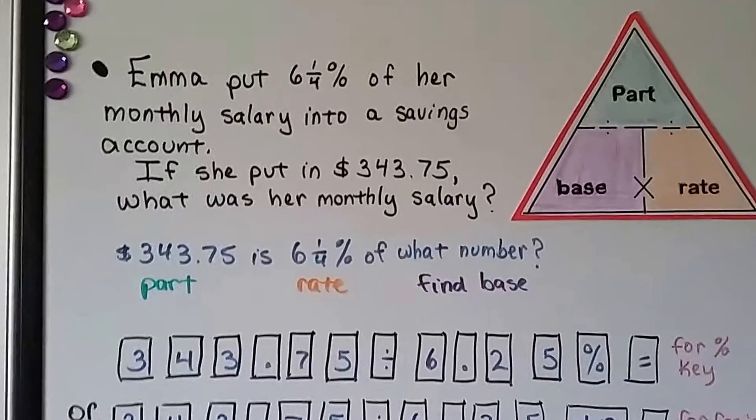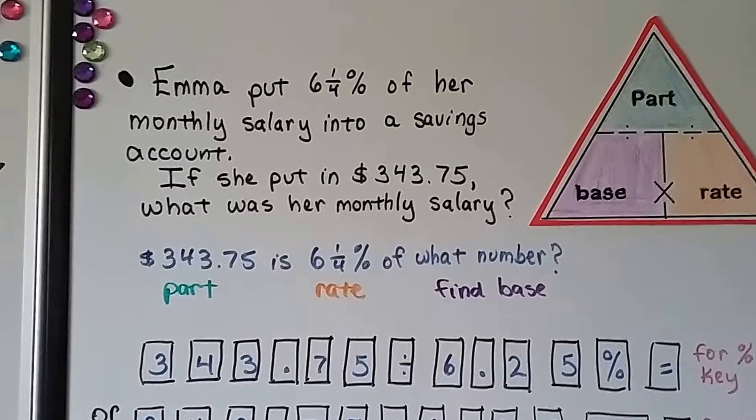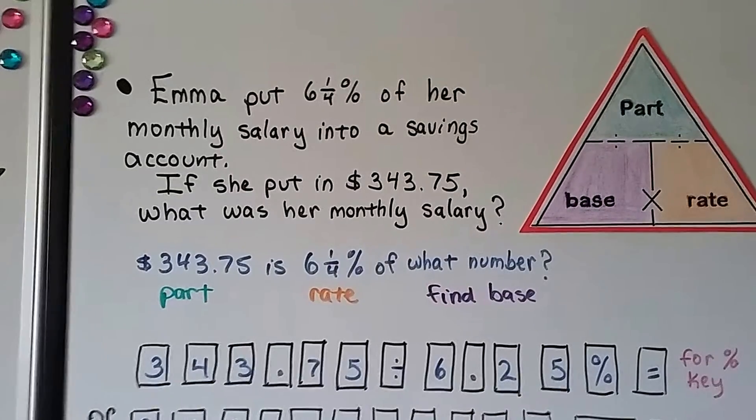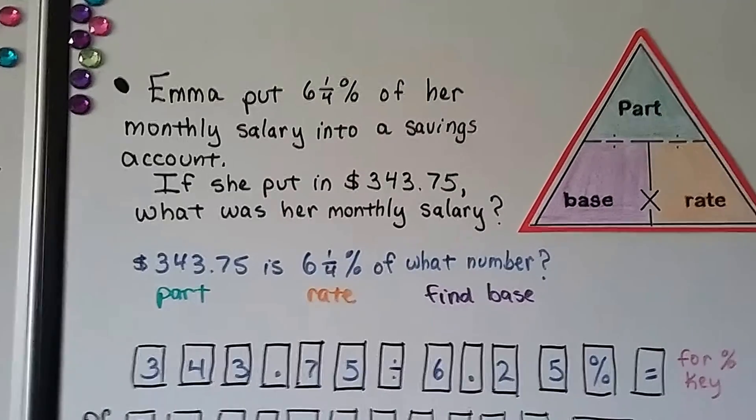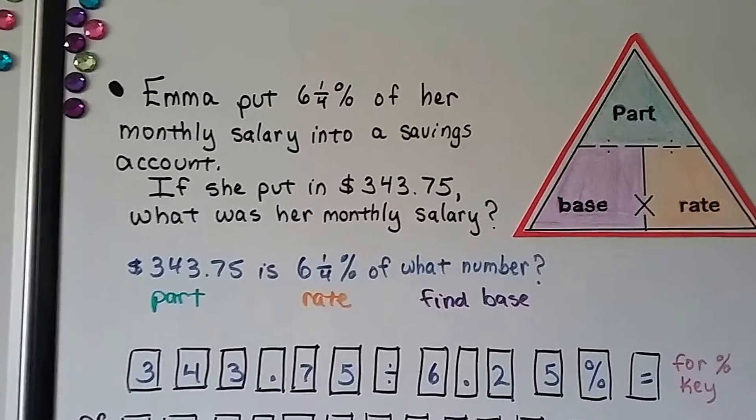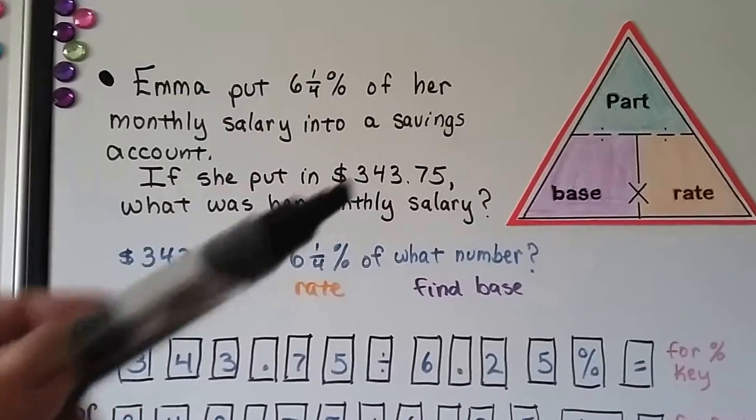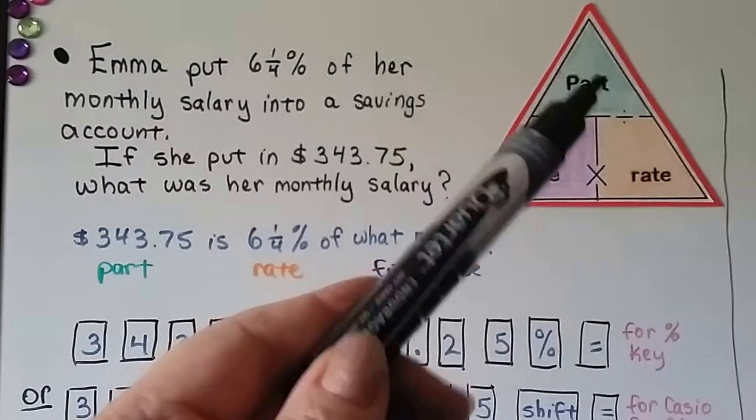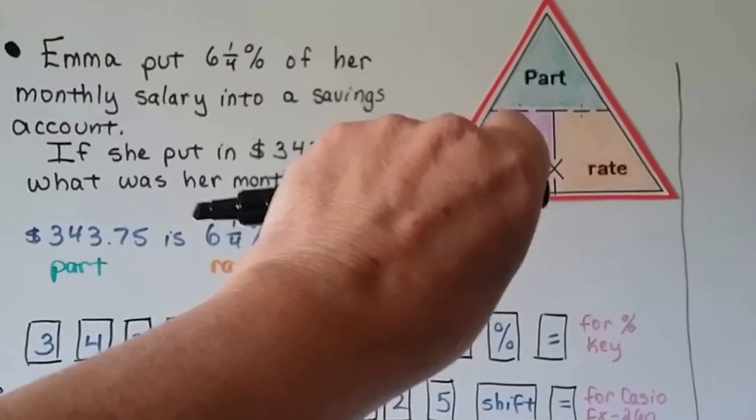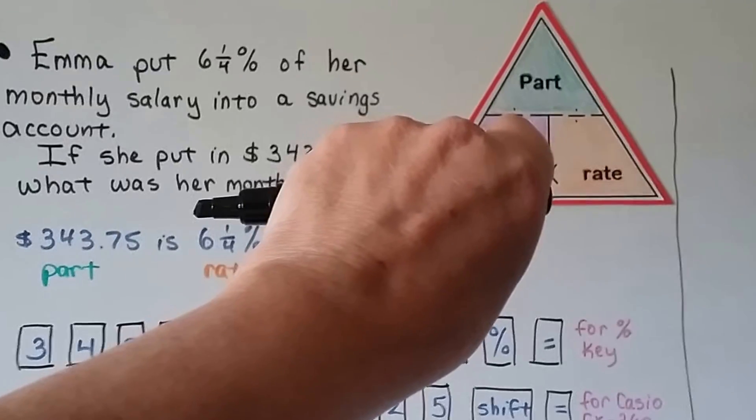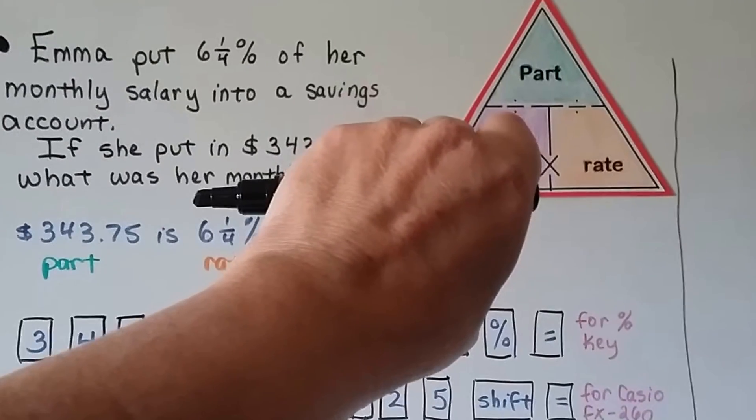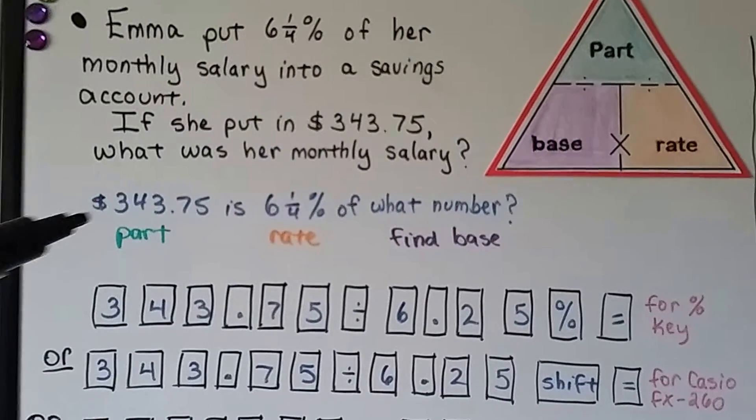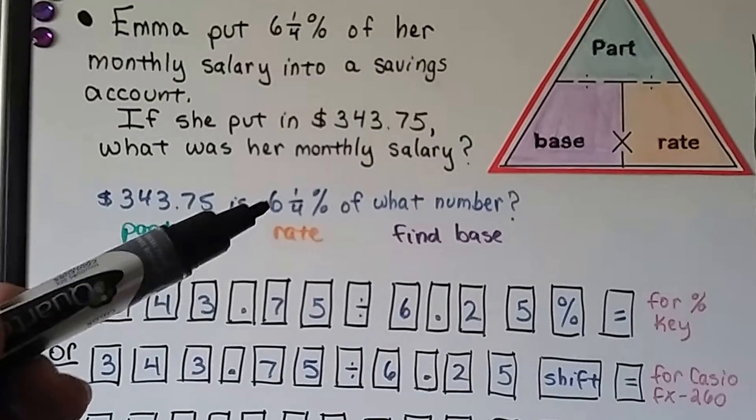In this one, Emma put 6 1/4% of her monthly salary into a savings account. If she put in $343.75, what's her monthly salary? So this is the part. We know the rate and the part, we just need to find the base. So if we know the rate and the part and the base is missing, then we need to do part divided by rate. Whatever one is missing, that's what we cover on the triangle, and then we do what it says, part divided by rate. So that means we need to do $343.75 divided by 6 1/4%.